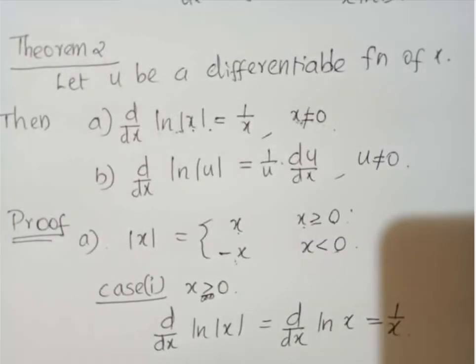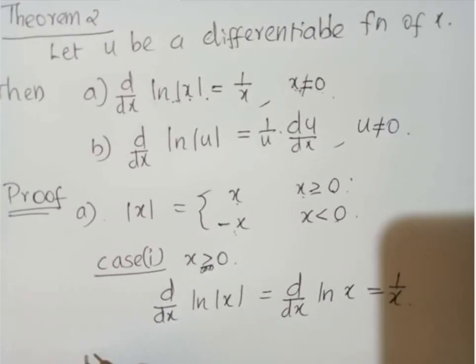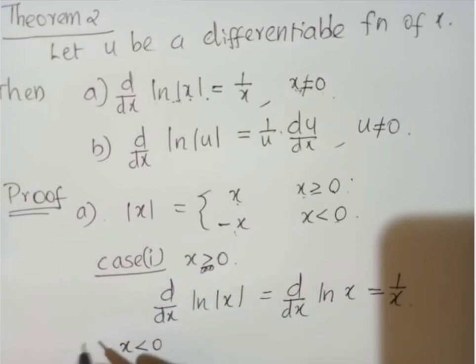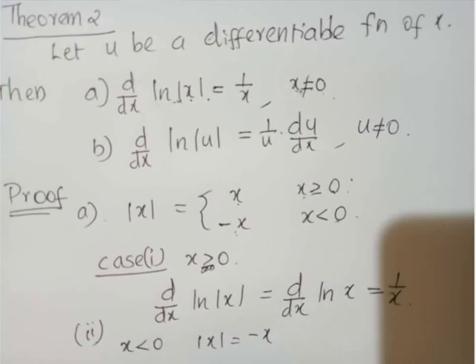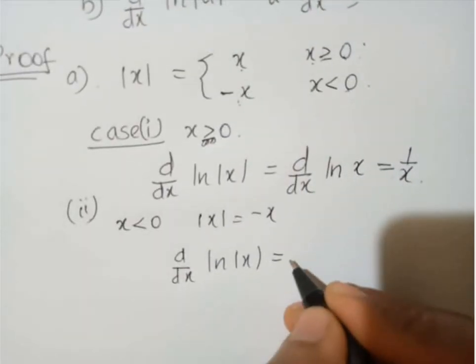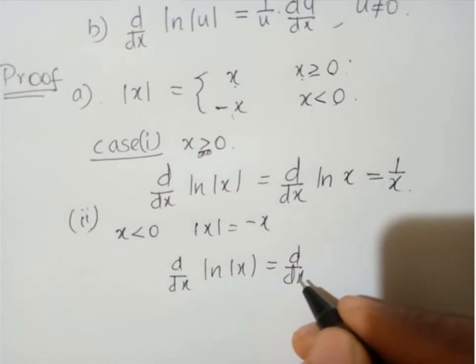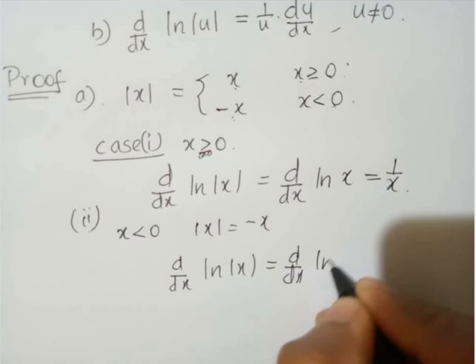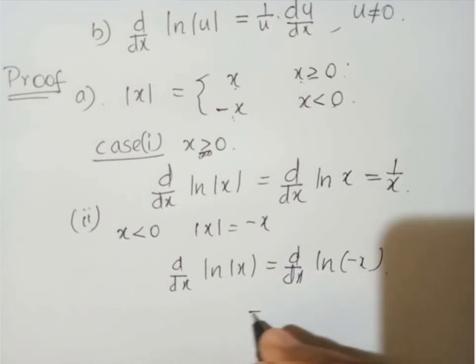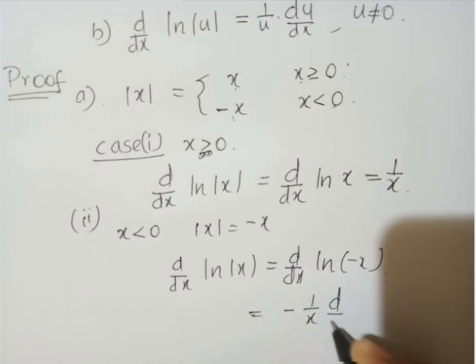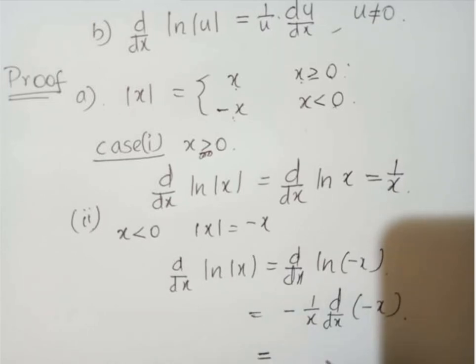And next, if x is less than 0, second case, case 2, then |x| is equal to minus x. So, d by dx of ln |x| is equal to d by dx of ln of minus x. That's equal to minus 1 by x into d by dx of minus x. That's equal to minus 1 by x into minus 1 which is equal to 1 by x.